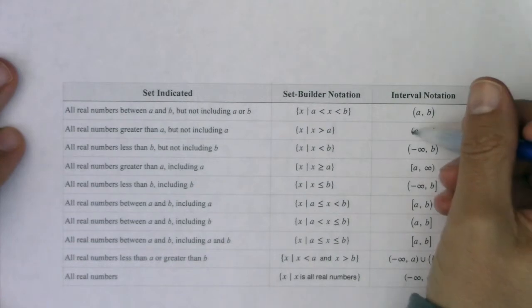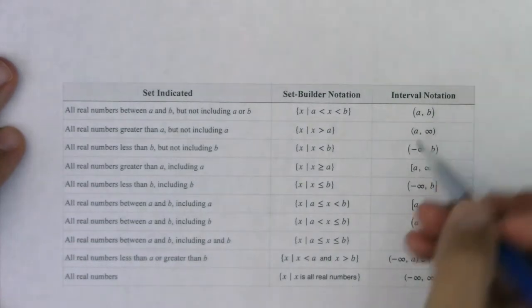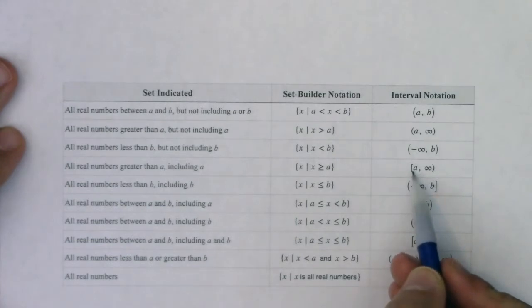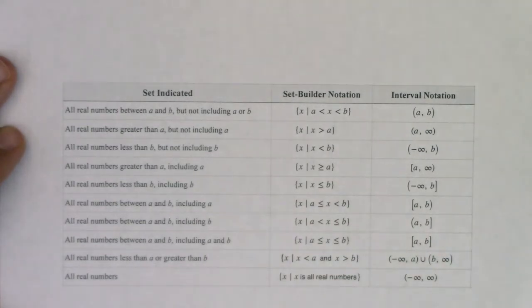You can have a number and an infinity with open parentheses, a negative infinity and a number with open parentheses, or maybe you have a closed bracket here against an infinity with an open parentheses. You can see there are just a ton of options. And take a look, all real numbers means we go from negative infinity to infinity, and they both get parentheses.